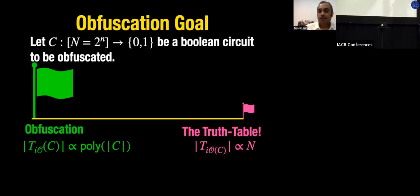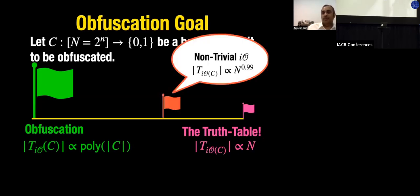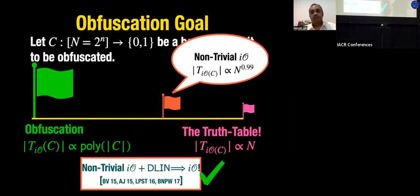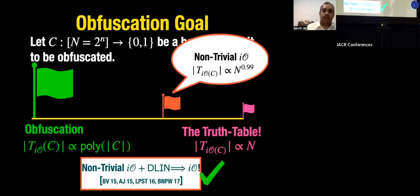A natural question is: can we improve upon the truth-table construction? Can we construct an obfuscation scheme where the time is, say, N^{0.99} — a small factor loss? It turns out, from beautiful prior work, that such an improvement is enough to take us all the way to IO: if we can construct such a non-trivial IO scheme, then relying on any assumption that gives rise to public-key encryption — in particular DLIN — we can build IO.